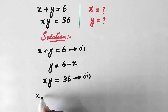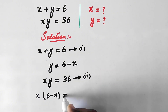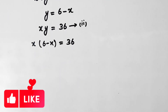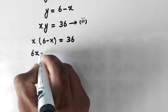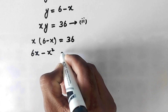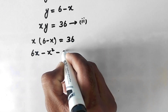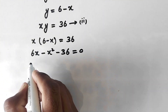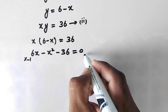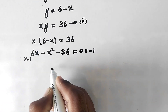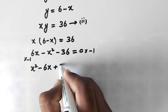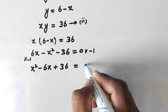Substituting, we get x times (6 minus x) equal to 36. Expanding gives 6x minus x squared, and taking this to the left hand side gives 6x minus x squared minus 36 equal to 0. Multiplying both sides by negative 1, we get x squared minus 6x plus 36 equal to 0.